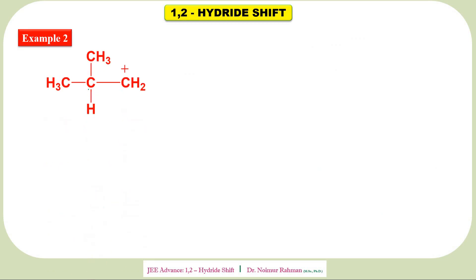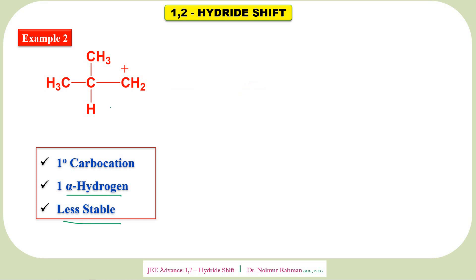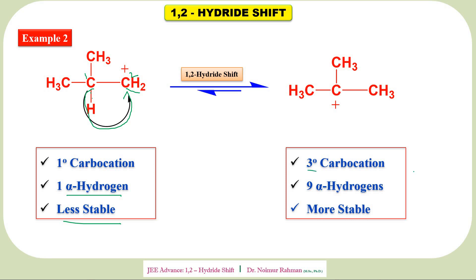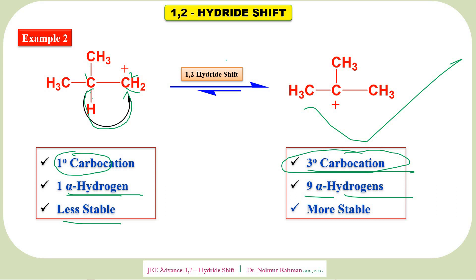Example two: this is a primary carbocation with only one alpha hydrogen — it is less stable. Let's make it more stable. The hydride will be shifted from carbon one to carbon two. As a result, the positive charge vanishes on the original carbon and appears on the middle carbon. Now it is a tertiary carbocation. Initially it had only one alpha hydrogen; now it has nine alpha hydrogens. This is undoubtedly more stable, made possible by 1,2-hydride shift.